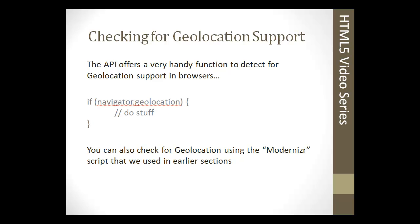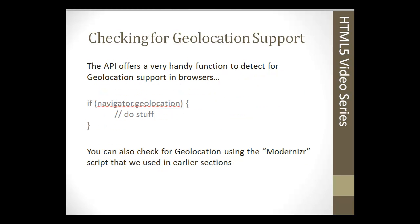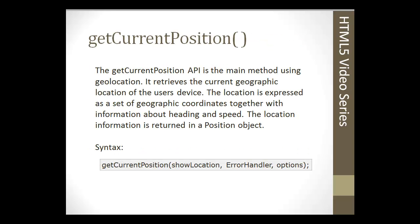We want to check the browser to see if there's geolocation support. All the latest versions of every browser do support geolocation, but you should still add this check in your code just in case some people use older browsers. The API offers a handy function to detect support — it's as simple as checking the navigator object for the geolocation property. You can also use Modernizr, as we've used in past sections, which is almost just as simple.